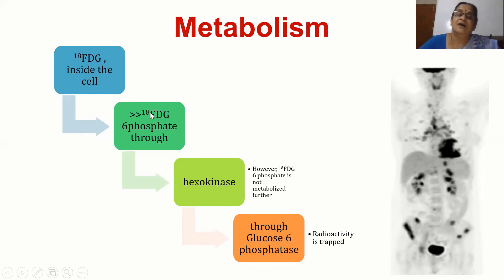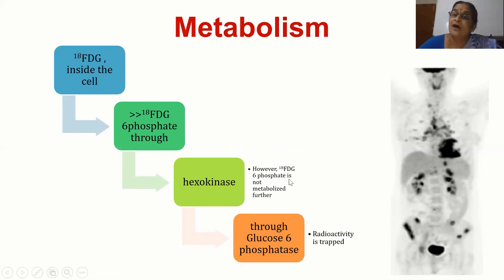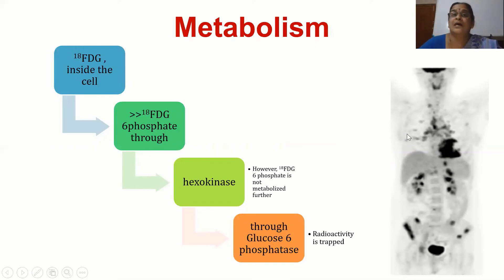Hexokinase considers FDG as glucose and converts 18-FDG into 18-FDG-6-phosphate. However, the next enzyme, glucose-6-phosphatase, does not identify it because it is very specific to glucose, so FDG does not enter the glycolytic pathway. Instead, it gets trapped inside the cell — good for the scan. This is why we can find hypermetabolic areas: brain tissue and cancer cells, which are hypermetabolic, will pick up the tracer.